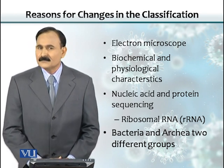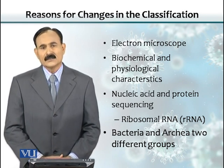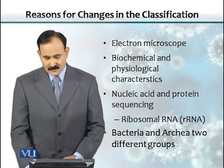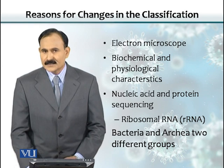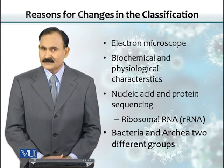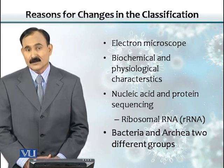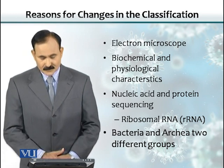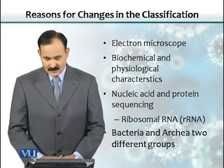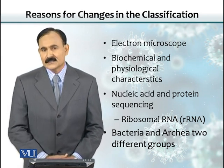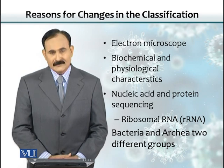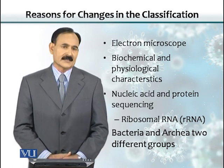Now, what are the bases for classification of microorganisms? They are classified based on the similarities that they share with each other. It could be shape or physical structure, what we call morphology. It could be biochemical similarities. It could be genetic similarities like DNA sequences or RNA sequences that they share with each other, or even evolutionary relationships could be used for classifying them.